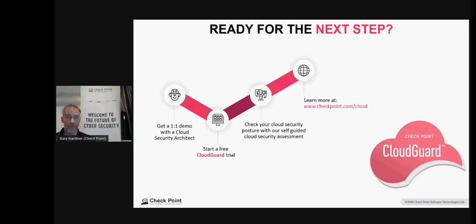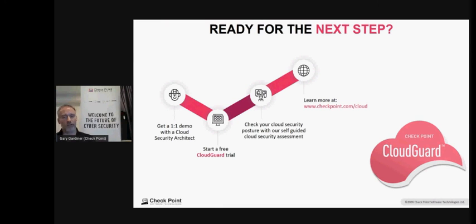As a next step, we can arrange a demo and get you in front of one of our cloud security architects. We can start a free CloudGuard trial — all we need is read-only access into your environment, and within about an hour we will tell you if you have misconfigurations inside your cloud network. We will find those misconfigurations. You can learn more at cloud.checkpoint.com.